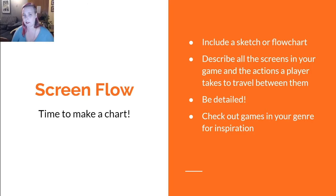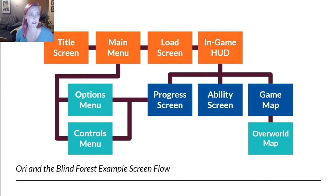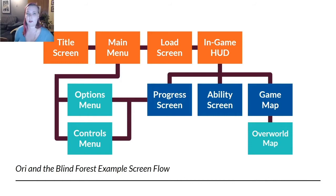Let's look at a more detailed example. We're going to look at all of the initial screens in Ori and the Blind Forest, and hopefully that'll give you a good idea of what you're going to need. This is what the final screen flow is going to look like for the example we're going over. In order to really understand how it all works, let's look at each individual screen, and then we'll put it back together at the end.